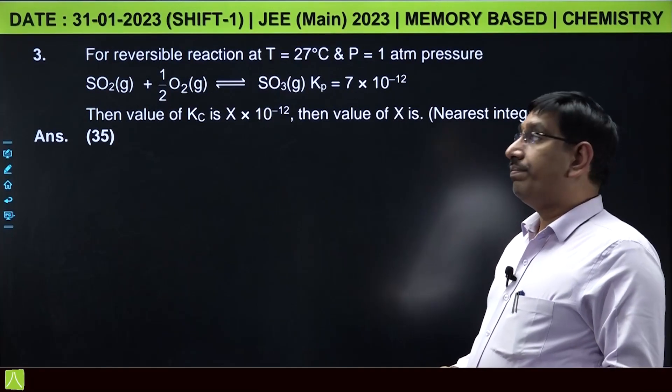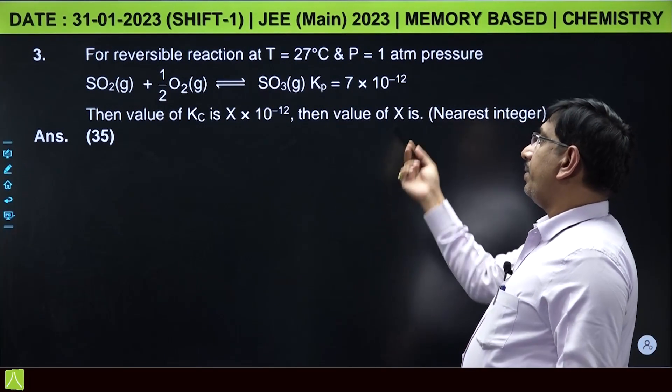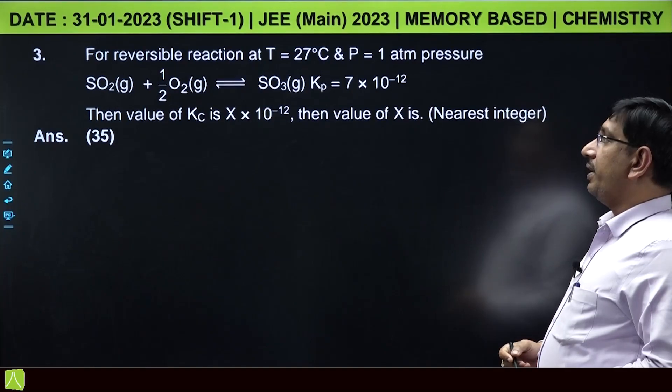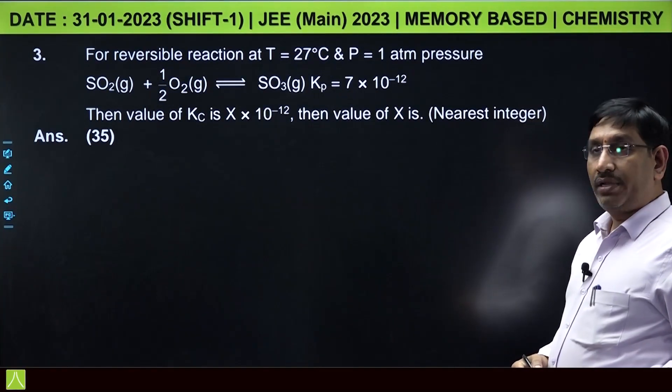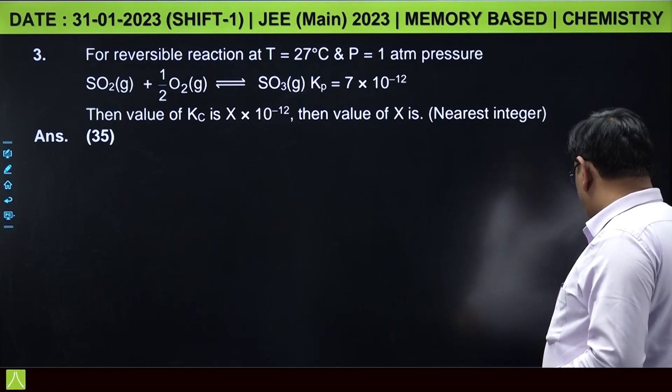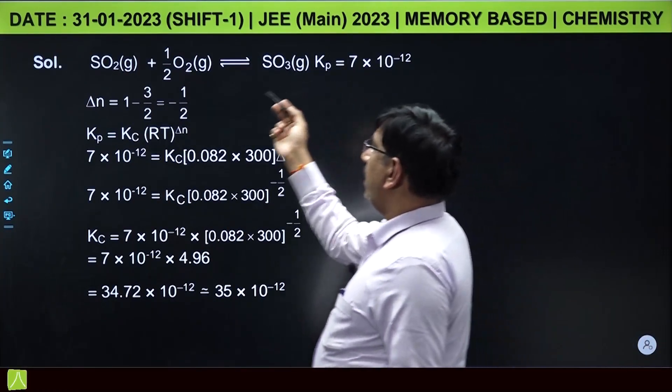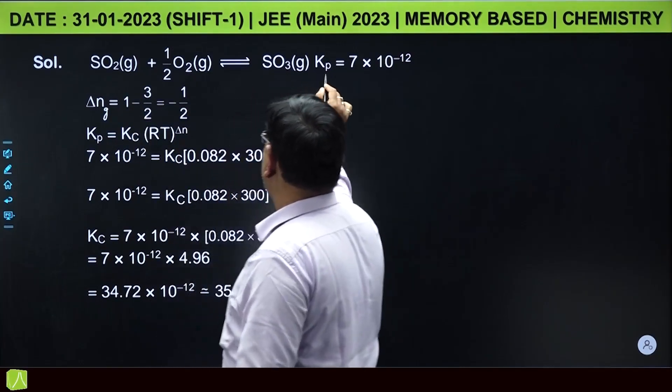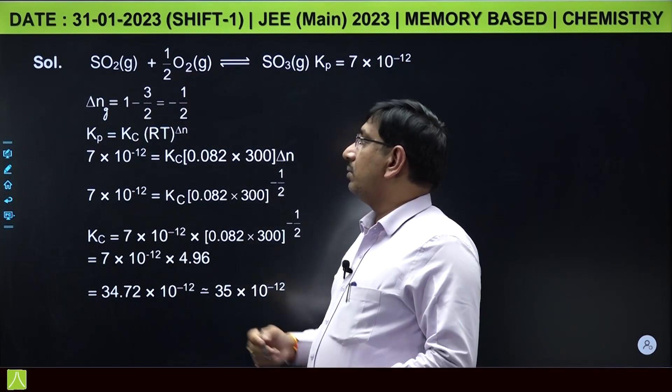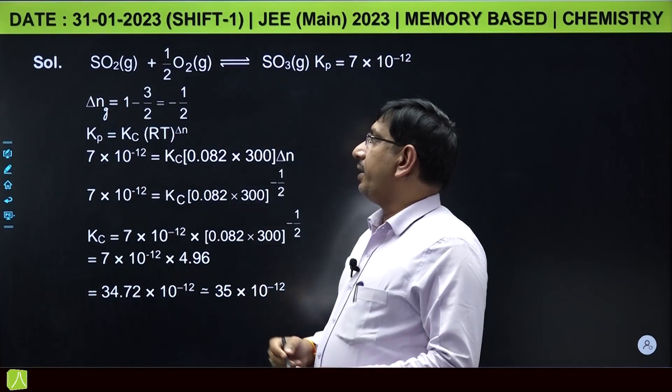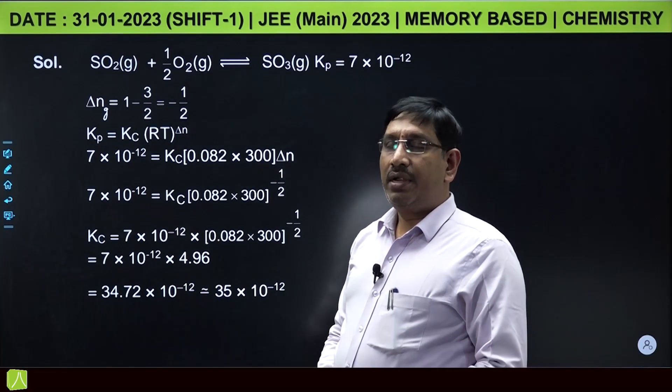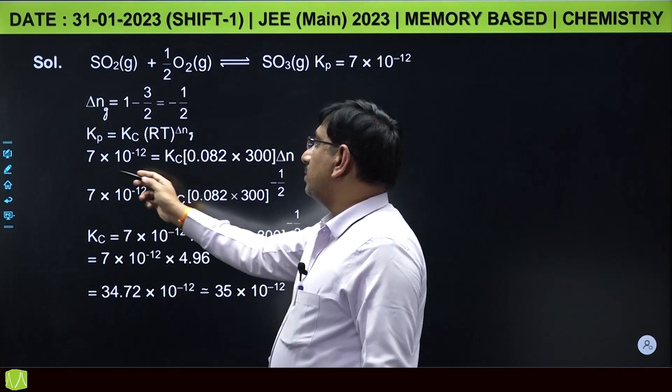This is from chemical equilibrium. For a reversible reaction at temperature 27 degree Celsius, pressure 1 atm, SO2 plus half O2 gives SO3, Kp value is given 7 into 10 power minus 12. The value of Kc is X into 10 power minus 12. The value of X is: delta NG value calculate, number of moles of gaseous products minus number of moles of gaseous reactants, 1 minus 1 plus 1 by 2 that is 3 by 2, 1 minus 3 by 2 is minus 1 by 2. Kp Kc relation: Kp equal to Kc into RT power delta NG value.